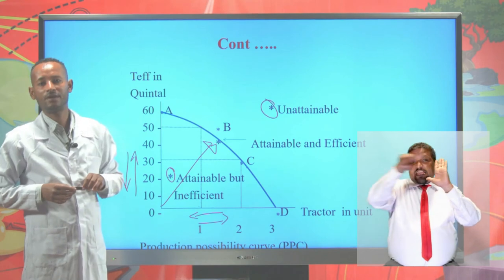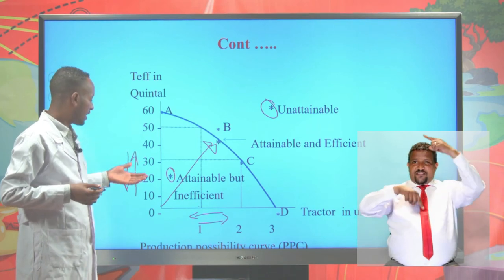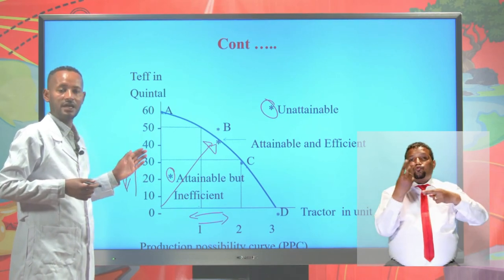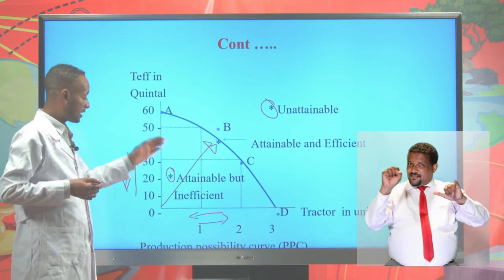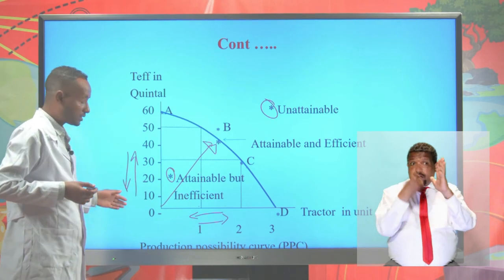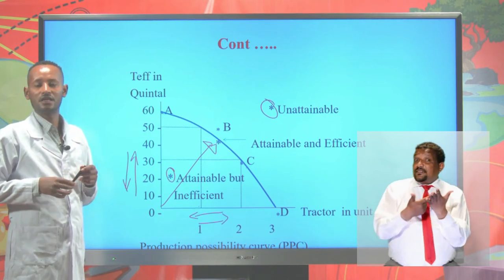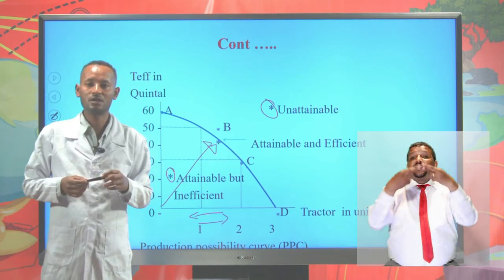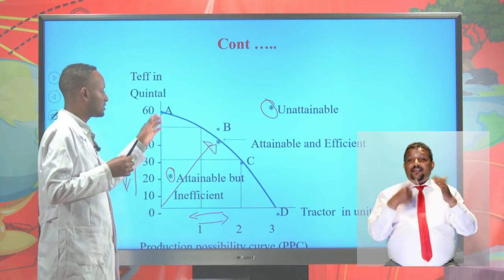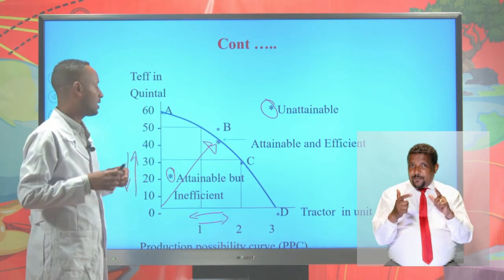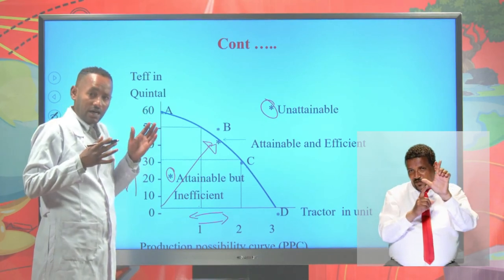Another property is that the PPC is negatively sloped, or downward sloping. This is due to the inverse relationship between the two commodities on the x and y axes: as we increase production of one commodity, we reduce production of the other, and vice versa. Hence the production possibility curve is a downward sloping curve.